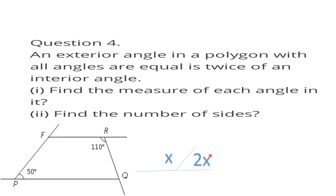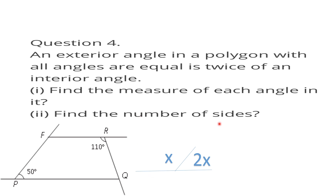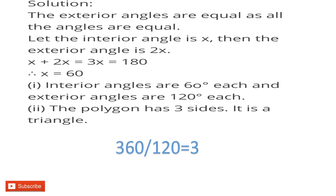The interior and exterior angles are supplementary — that's why these two angles add up to 180 degrees. Let the interior angle be x. Then the exterior angle is 2x. So x plus 2x equals 3x equals 180 degrees.